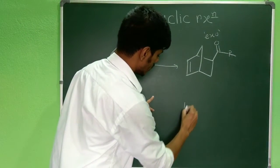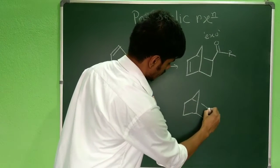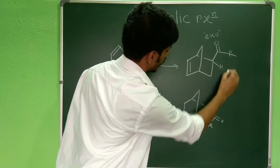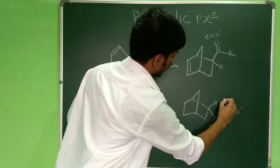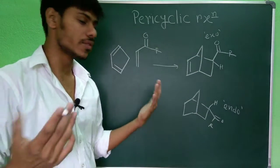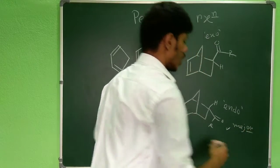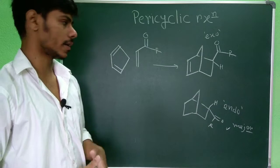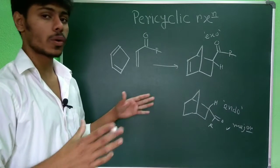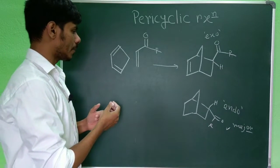The other possibility is the endo product. Endo means these two are on the same side — the hydrogen is above in exo, but here the hydrogen is below, that is endo. Now if you think about steric hindrance, you would predict that the exo product will be the major product, but in reality the endo is the major product. This can be explained very nicely if we consider the orbital interaction of this pericyclic reaction.